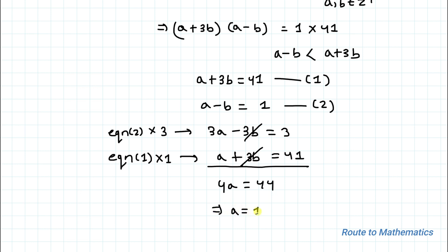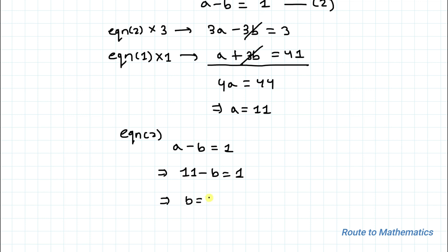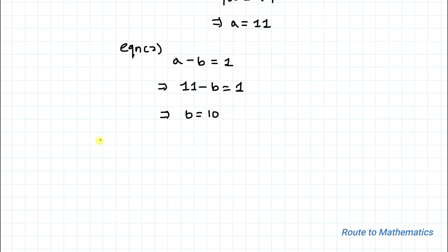So a = 11. Substituting into Equation 2: 11 - b = 1, which gives b = 10. We are asked to find a² + b².